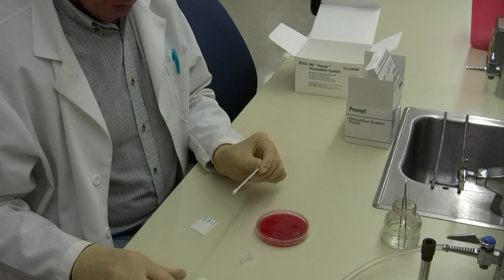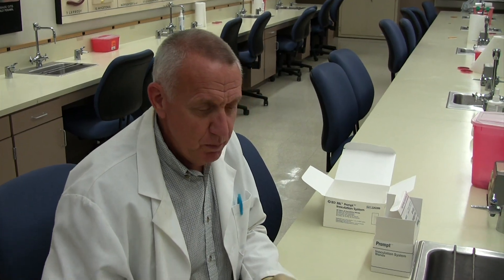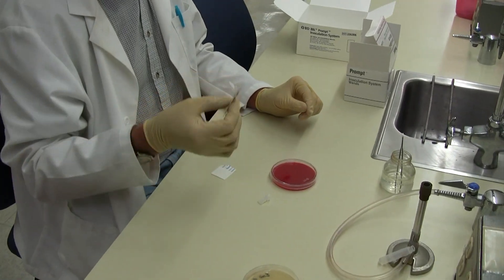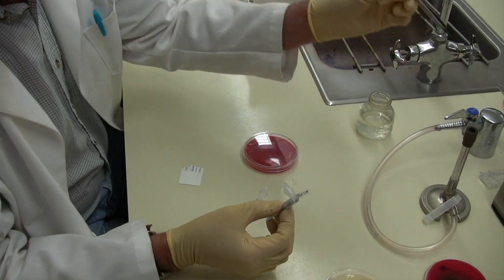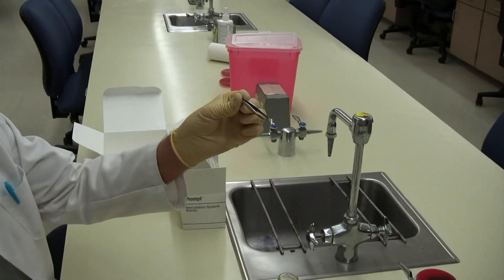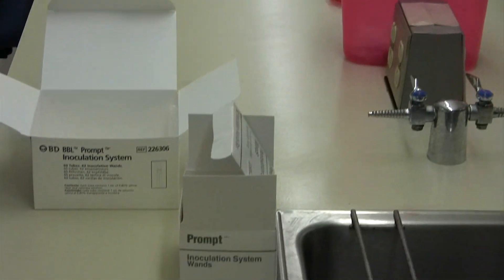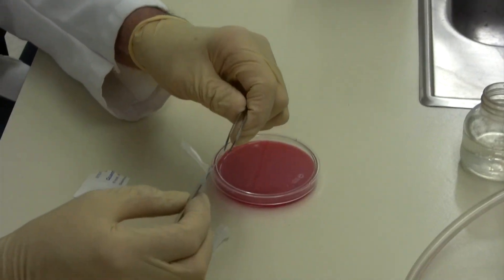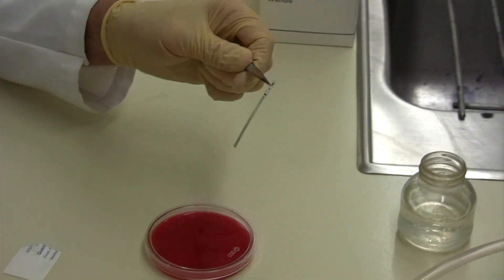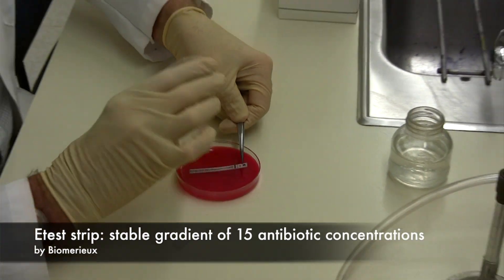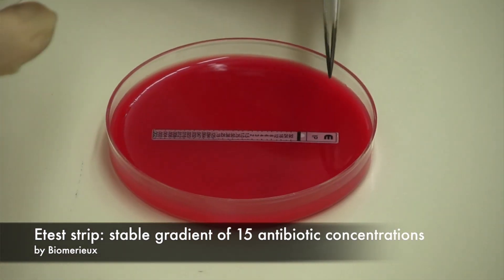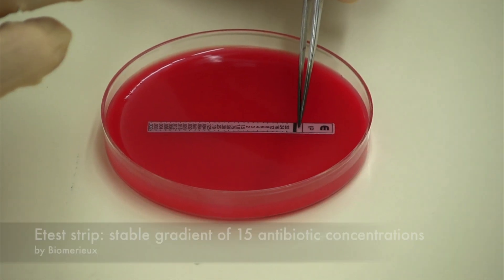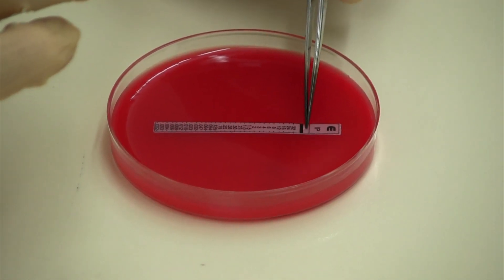Once you do that, you're ready to put the antibiotic strip onto the plate. You would use a sterile forceps. I'm going to flame this and take out one strip, place it upright on the plate in the center like so. If you have any air bubbles, you can work them out on the side a little bit.